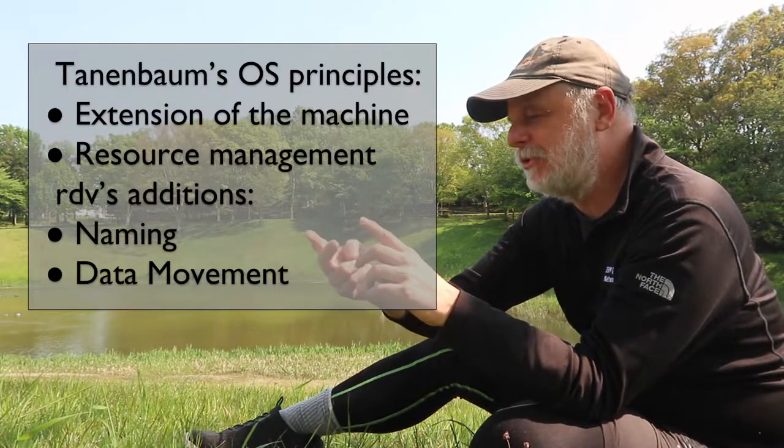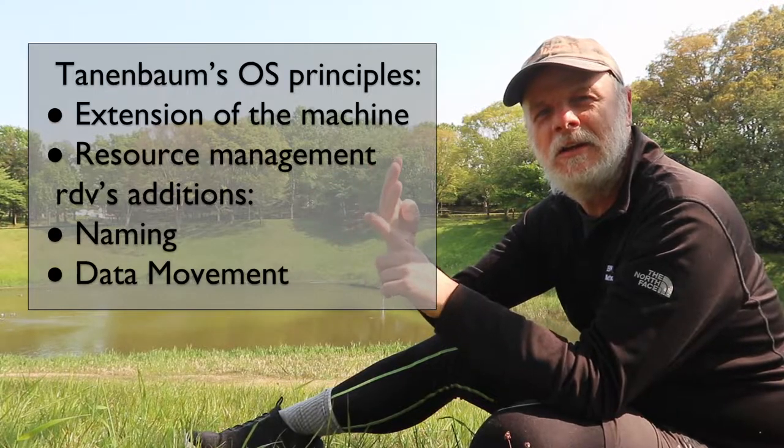The fourth thing is data movement — the movement of data into and out of the machine: from storage devices into memory, from memory out onto storage devices, out onto networks, and from one process to another or from one memory location to another. All of these operations require access to physical parts of the system that you can't allow user programs to access directly. If you do, they can potentially cause security problems, so data movement has to be managed by the operating system itself. So: extensibility of the machine, resource management, naming, and data movement.